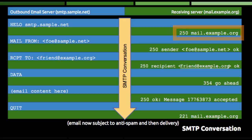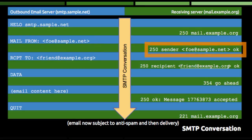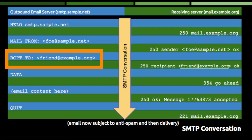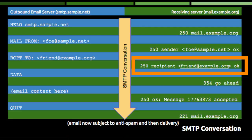The outbound email server then expresses its desire to deliver email by telling the receiving server where email is coming from. This is the MAIL FROM command — we're using foe@sample.net in this example. In response, the receiving server sends a reply that says 250, indicating this sender is okay. The outbound server then tells the receiver about the recipient of the email using the RCPT TO command, with the example address friend@example.org. Because of the pre-connection dance done prior to the SMTP conversation, the outbound server can expect the receiving server to accept email on behalf of the recipient domain, and the receiving server replies with 250 confirming the recipient is okay.